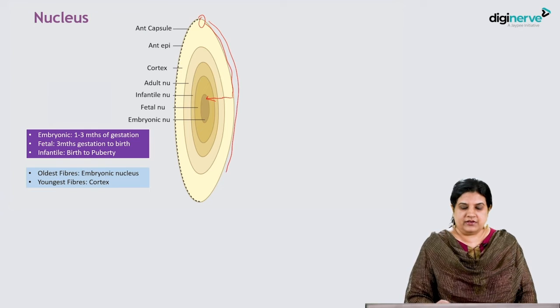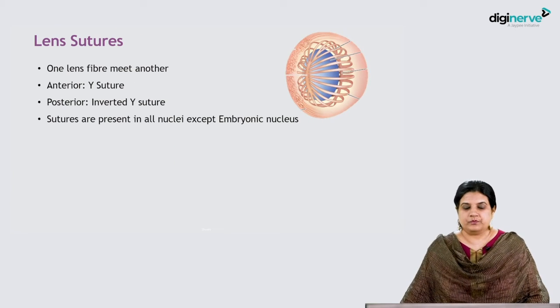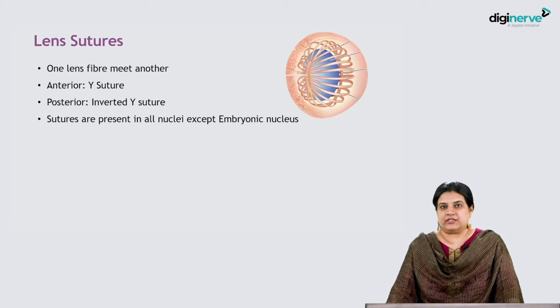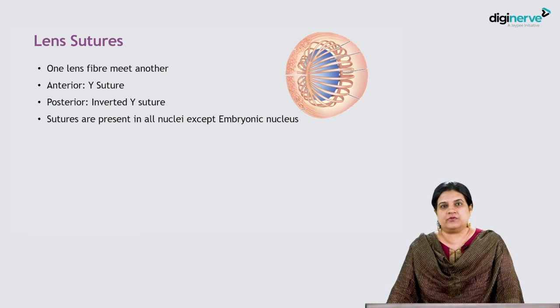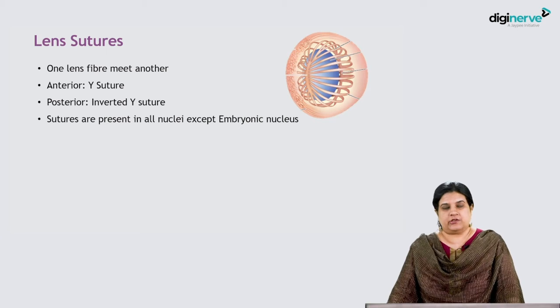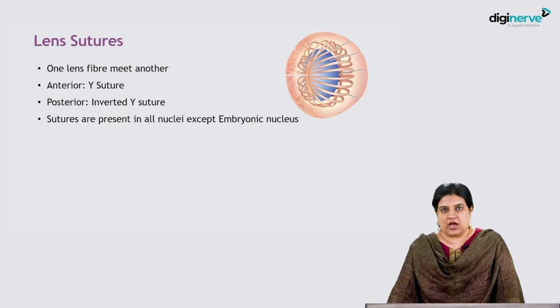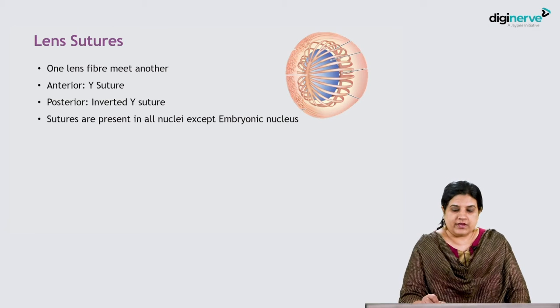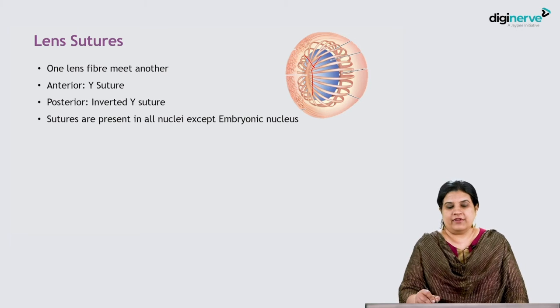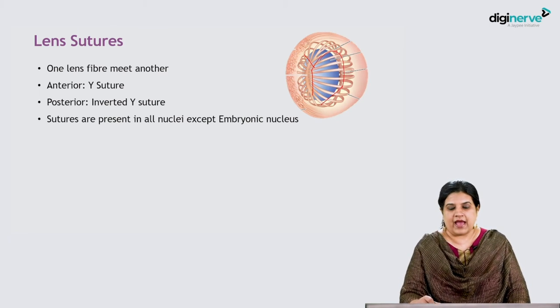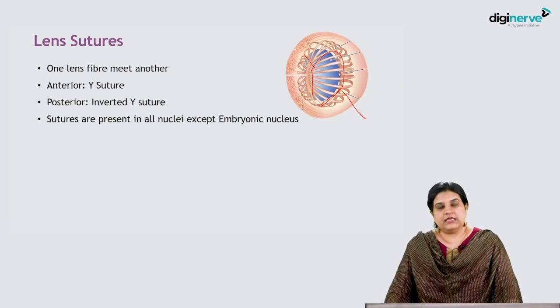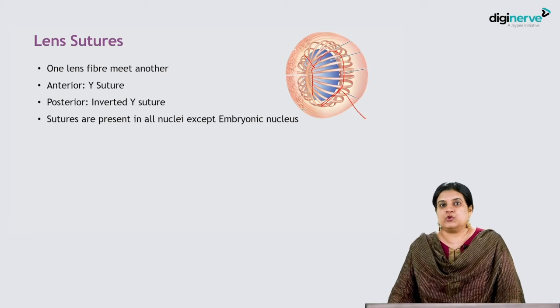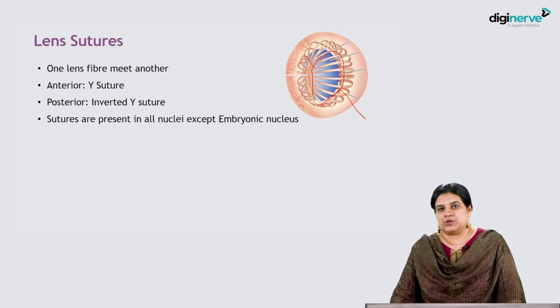Now we come to lens sutures. Lens fibers from the anterior part meet fibers from the posterior part. The place where they meet is called a suture. Anteriorly, this suture is erect Y-shaped, while posteriorly it forms an inverted Y-shaped suture. Sutures are present in all nuclei except embryonic nucleus.